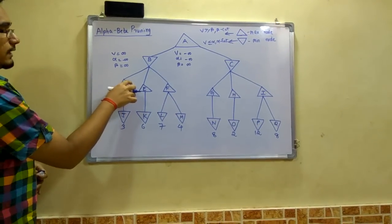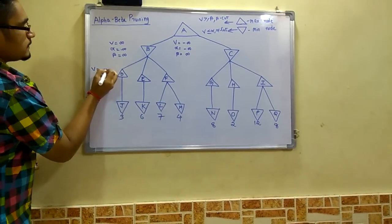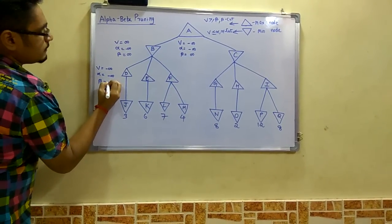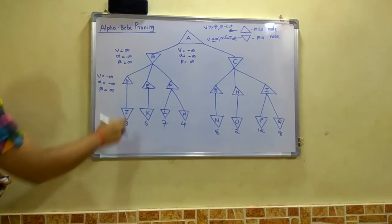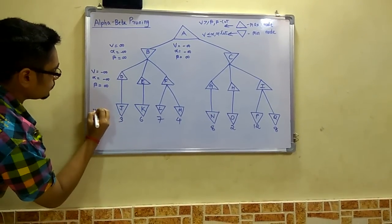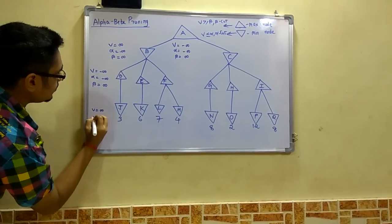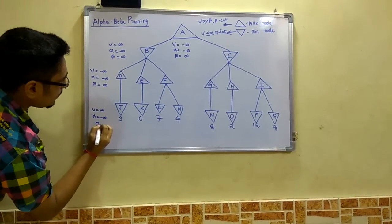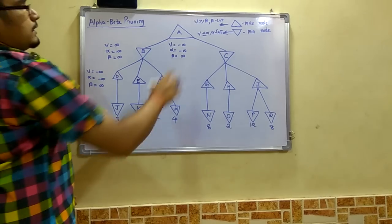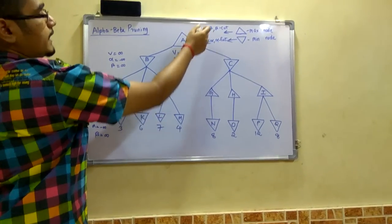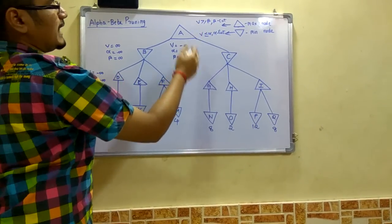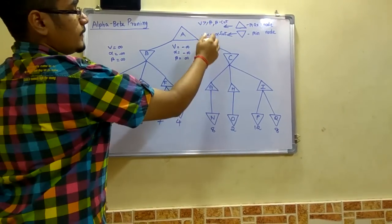At the next minimizer node, alpha is minus infinity and beta is positive infinity. Moving down to a leaf node, we assign V as positive infinity, alpha as minus infinity, and beta as positive infinity. Now there is a key rule: if V is greater than or equal to beta, we perform a beta cut; and if V is less than or equal to alpha, we perform an alpha cut.